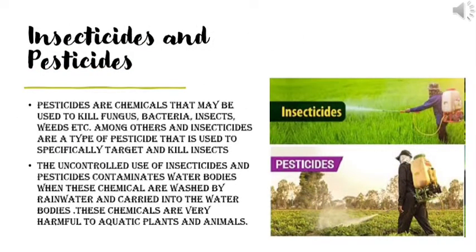Pesticides and insecticides: Pesticides are chemicals that may be used to kill fungus, bacteria, insects, rings, etc., among others. Insecticides are a type of pesticide used to specifically target and kill insects. Their uncontrolled use contaminates water bodies and harms aquatic life.